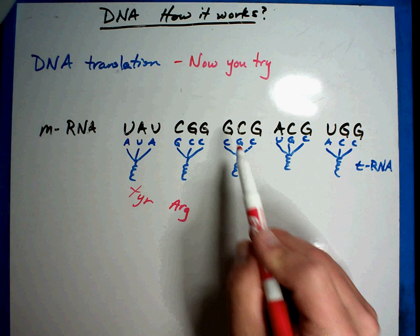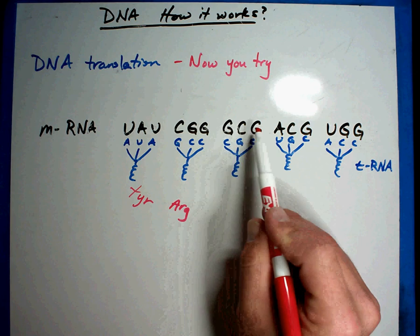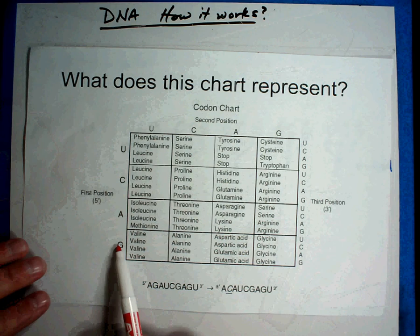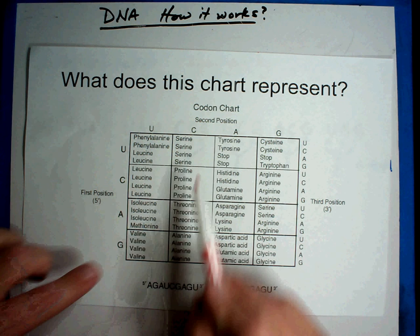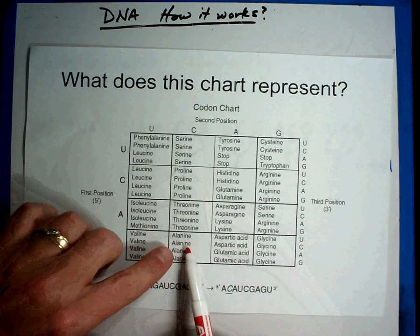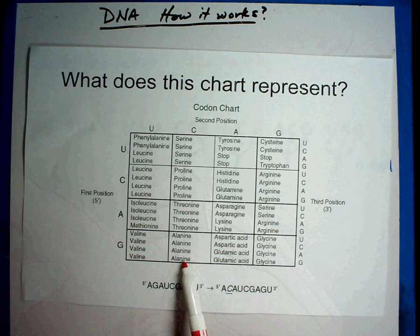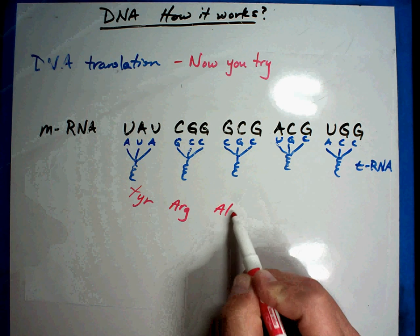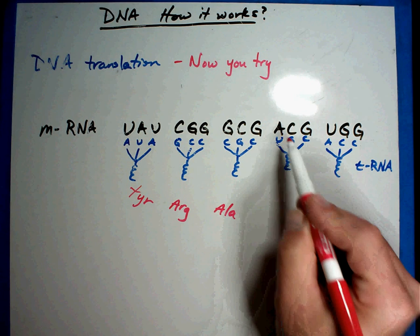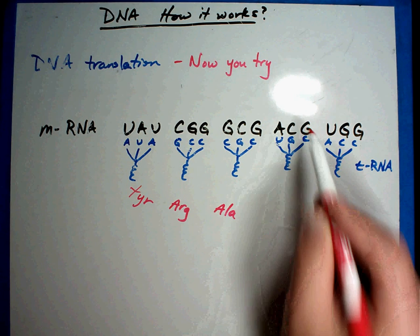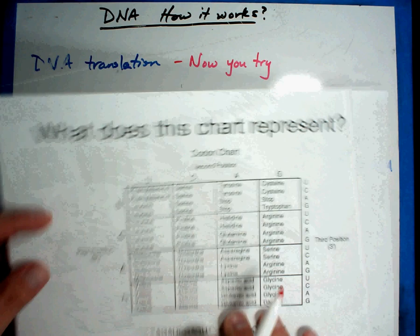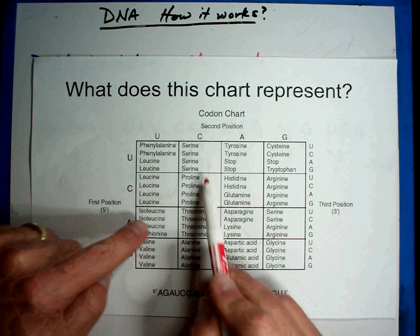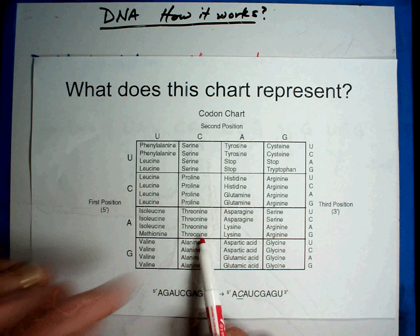The next one is G, C, G. G, G, C, G — and working through the codon chart that gives us another amino acid.